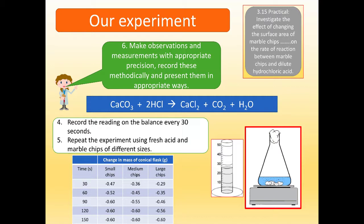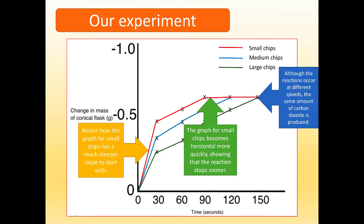Now, having got the data, we then may decide to plot a graph. So here we have the graph for the experiment. Left-hand axis, we've got change in mass conical flask. Bottom axis, time in seconds. I'm going to discuss how we mark the graph in just a second. But here you can see, first of all, notice how the graph for small chips has a much steeper slope to start with. It's much steeper than the other two. The graph for small chips comes horizontal more quickly, showing the reaction stops sooner.